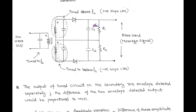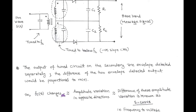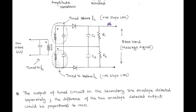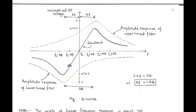The output of the tuned circuits on the secondary side are detected separately using envelope detectors, and the difference of these two envelope-detected outputs is proportional to the message signal. On the basis of operating principle, as the instantaneous frequency of the FM wave changes, there correspond amplitude variations in opposite directions with the help of the secondary tuned circuits called positive and negative slope circuits. The difference of these amplitude variations is known as the S-curve. This curve is a frequency versus voltage characteristic and its shape is like the letter S, hence called the S-curve, as shown in the figure. The dotted lines are the amplitude responses of the upper positive slope circuit and lower negative slope circuit, and the solid line — the difference of the two envelope-detected outputs — is proportional to the message signal.